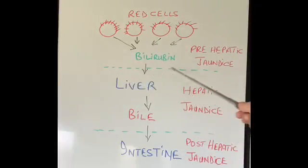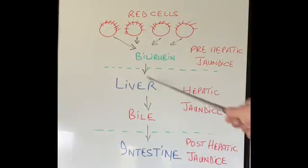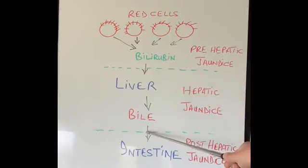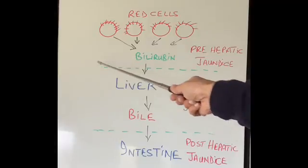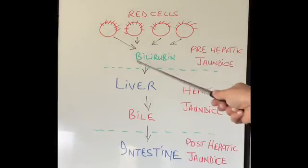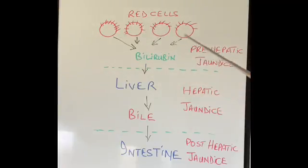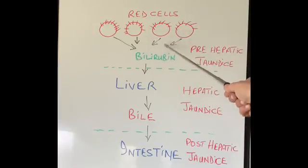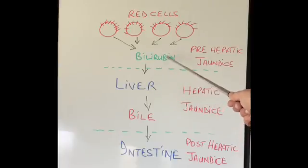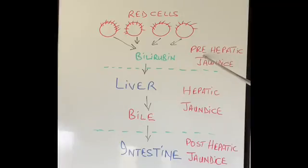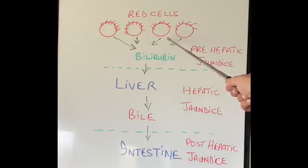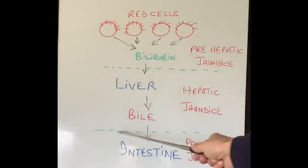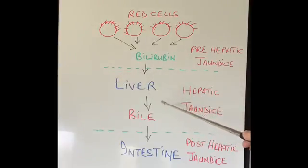I have drawn two lines on this diagram — there is an area above the first line, an area between the two lines, and a third area below the second line. Jaundice can happen because of three reasons. The first reason relates to the area above the first line: any condition in which too many red cells are breaking down — more than our liver can cope with — causes bilirubin to build up because the liver can't get rid of it quickly enough. This is called pre-hepatic jaundice. Pre means before, hepatic means liver — so it's jaundice happening before the bilirubin gets to the liver.